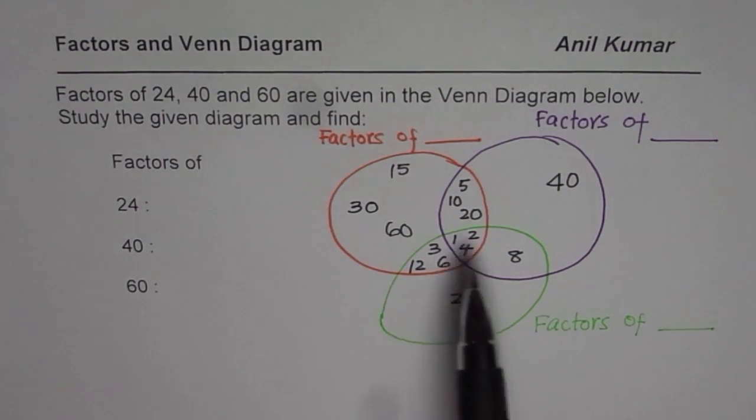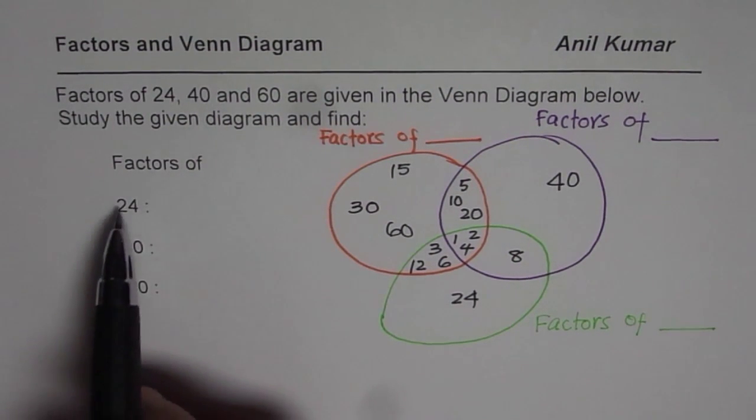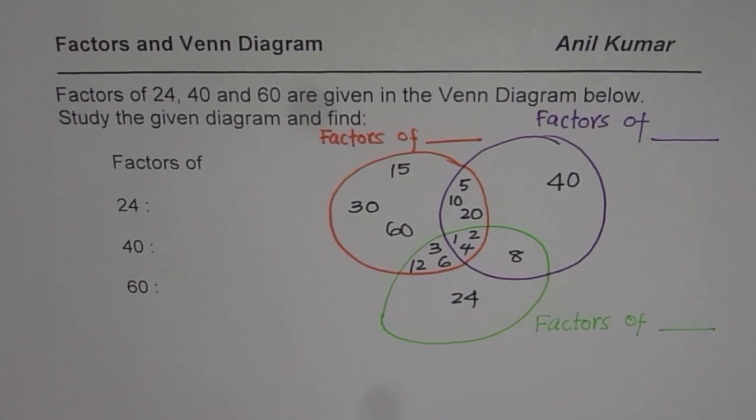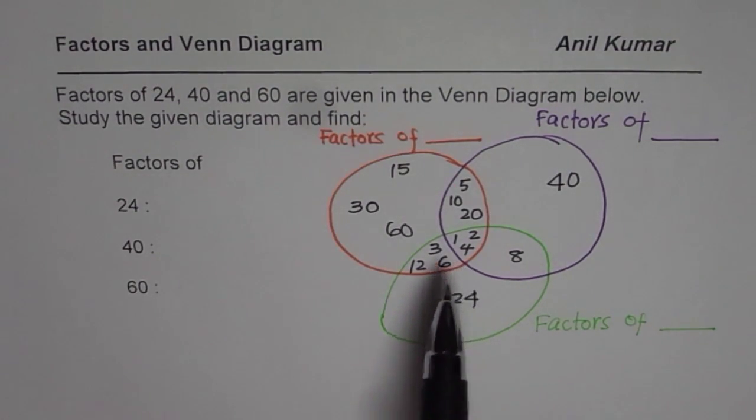We have three different circles and within these circles we have written numbers. And these numbers are actually factors of 24, 40 and 60. Study the given diagram and find, first thing you need to find is which circle represents factors of which number.